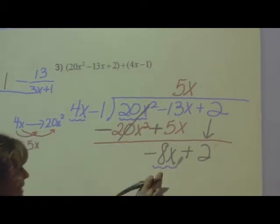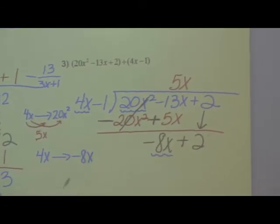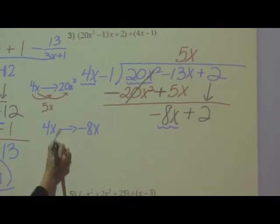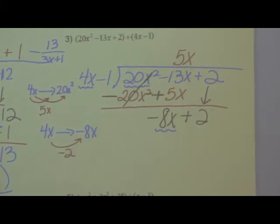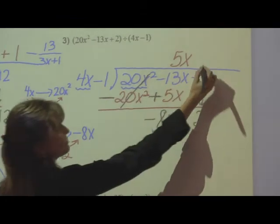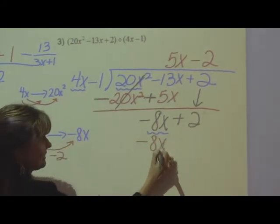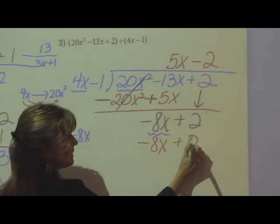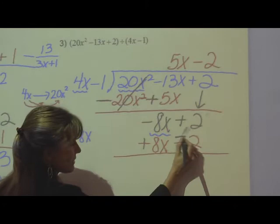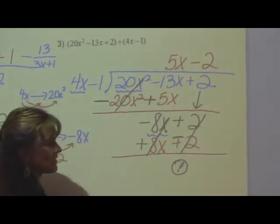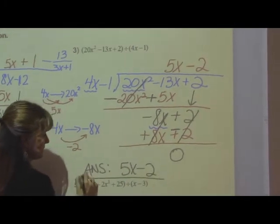And then start the process all over again. Again, I am looking to get my two front terms to match. I'm going to think over to the side. 4x has to turn into a negative 8x. What would I multiply by to get that to turn into a negative 8x? Well, it has to turn negative, so I have to have a minus. And 4 times 2 gives me 8. So, negative 2 is the number that I choose up here. Negative 2 times positive 4x gives me negative 8x. Negative 2 times a negative 1 gives me a positive 2. Don't forget, you need to subtract. So, I'm going to subtract, subtract everything on the whole line. And this one works out quite nicely, because I end up with a remainder of 0. My final answer is the 5x - 2.